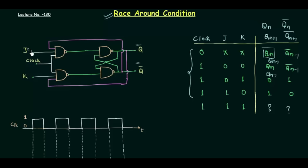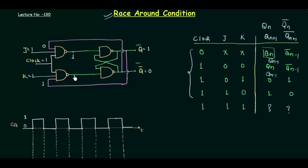Let's move to the circuit. J is 1, K is 1, and the clock is also high. Now I will assume Q is 1 and Q complement is 0. As you can see, Q is one of the inputs to this NAND gate, so at that point I have 1. Q complement is input to the other NAND gate, so at that point I have 0. These three inputs are given to each NAND gate. With 0, 1, and 1, taking the complement gives 1 at that point.